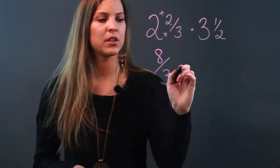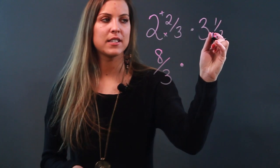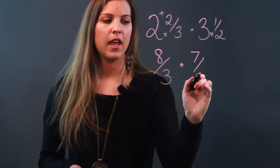All right, we're going to do the same thing to 3 1/2. So 2 times 3 is 6 plus 1 is 7, and put it over 2.